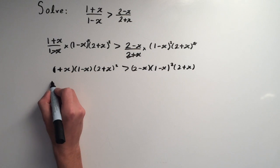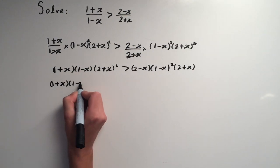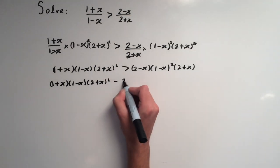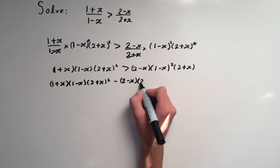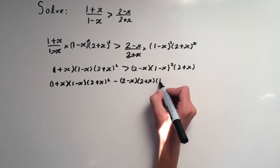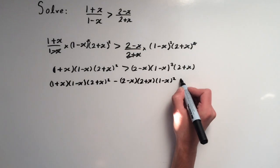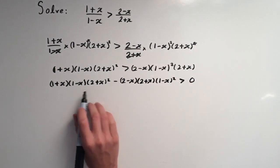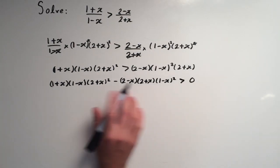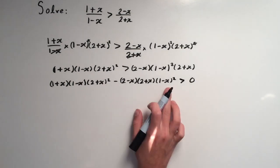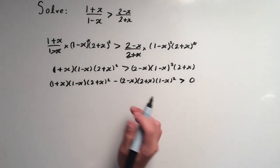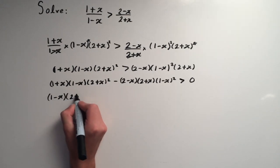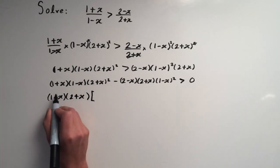We get (1+x)(1-x)(2+x)² minus (2-x)(2+x)(1-x)² greater than zero. Now we want to factor out common brackets. Both terms share (1-x) and (2+x), so let's factor those out.